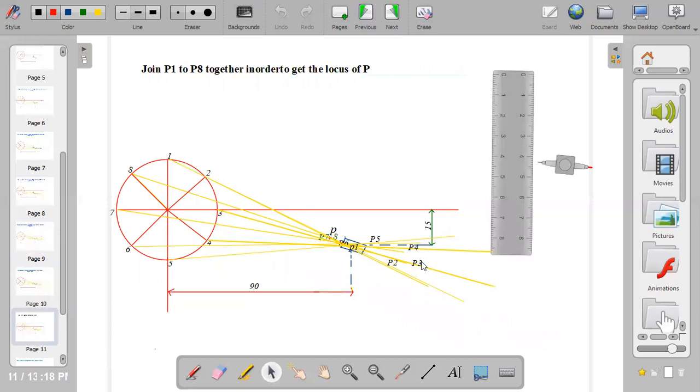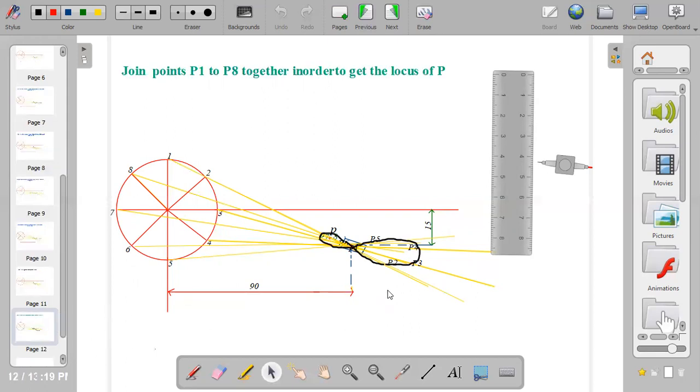When you are done, join from P1 to P2 to P3, P4, P5, P6, P7, and P8. From P1 which is at the pivot, take it to P2, connect it to P3, P4, P5, to P6, P7, and to P8. At the end of the day you have a shape like this.